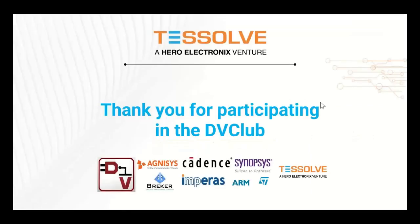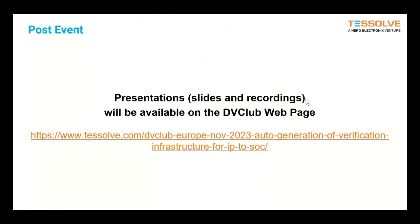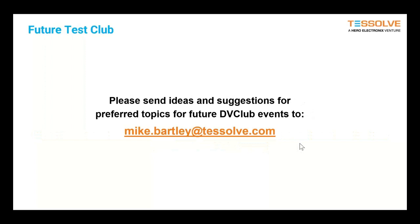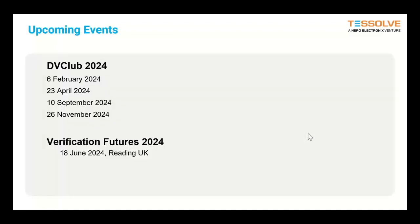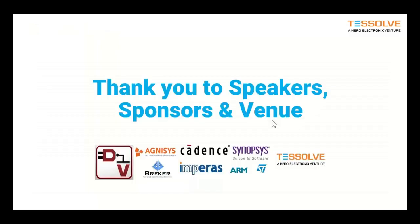Thank you for your participation today. The presentations — both slides and recordings for the three talks today — will be available on our website. If you have any ideas or suggestions for preferred topics, send them to us; about five of this year's six DV Clubs were based on suggestions. Important dates for next year: DV Club dates will be sent by email. Verification Futures is a physical and online event in the UK in Reading on June 18th, returning to the university venue. Thank you to our sponsors: Agnesis, Breker, Cadence, Synopsys, Imperas, Arm, ST, and TESOLV.